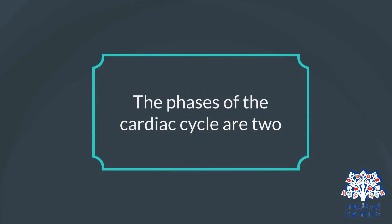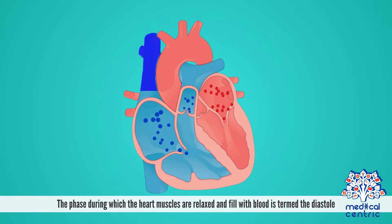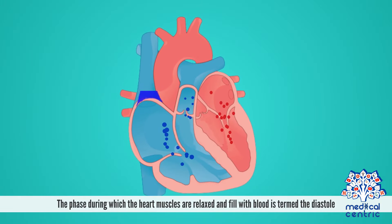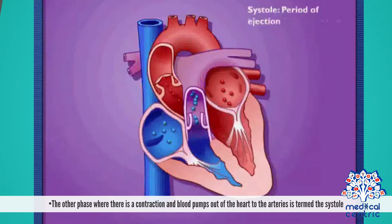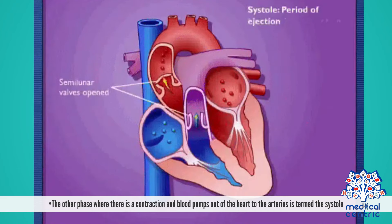The phases of the cardiac cycle are two. The phase during which the heart muscles are relaxed and fill with blood is termed the diastole. The other phase, where there is a contraction and blood pumps out of the heart to the arteries, is termed the systole.